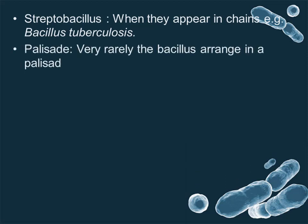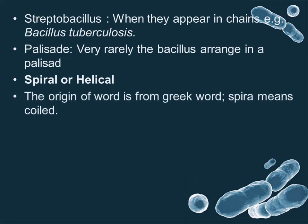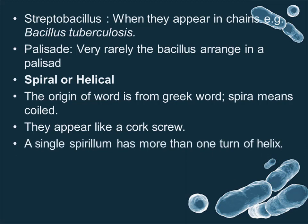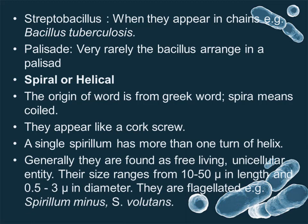Palisade — very rarely, bacilli are arranged in a palisade formation. Spiral or helical bacteria: the word originates from the Greek word 'spira,' meaning coiled. They appear like a corkscrew. A single spirillum has more than one turn of helix. Generally, they are found as free-living unicellular entities. Their size ranges from 10 to 15 microns in length and 0.5 to 3 microns in diameter. They are flagellated, for example, Spirillum minus and Spirillum volutans.